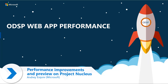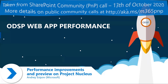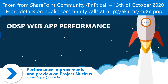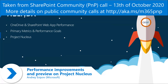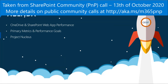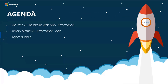I wanted to spend a few minutes talking about how we approach web application performance in OneDrive and SharePoint web applications. We'll specifically touch on two topics: how we approach web app performance across the web apps, the primary metrics we use to track whether we're improving performance, our goals, and finally we'll conclude with Project Nucleus. I'll do a few live demos and then I'll have an exciting announcement to share at the end as well.